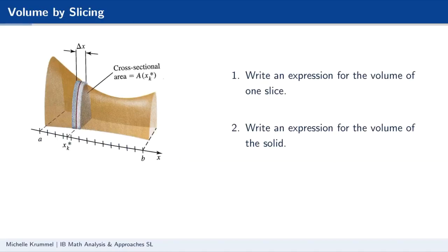Let's consider this first scenario. We have this three-dimensional solid figure, and if we were to take cross sections perpendicular to the x-axis, we see that the cross sections have a parabolic shape and a little bit of thickness — indicated by delta x in the figure. So we want to write an expression for the volume of one of these slices.